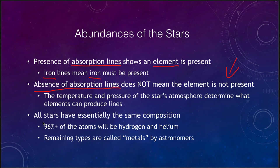What we see is that all stars have essentially the same composition — 96% or more of the atoms in any star are hydrogen and helium. Anything heavier than helium, astronomers call a metal. So when you see the terminology 'metals' or 'metallicity,' that simply means the percentage of a star that is not hydrogen or helium.